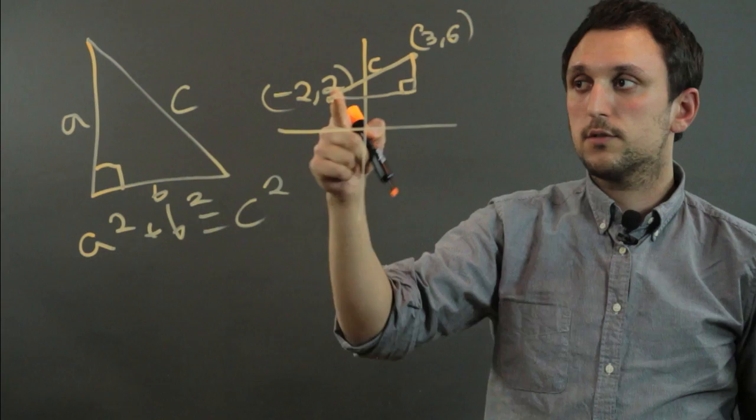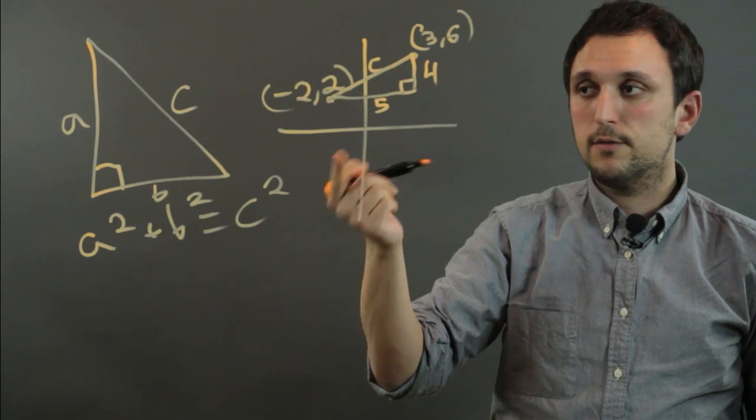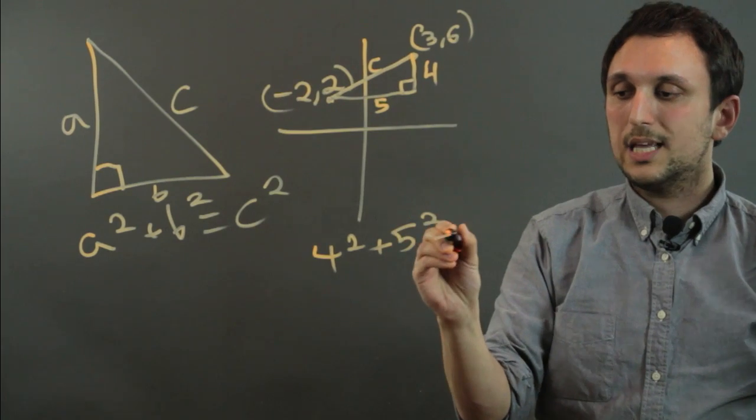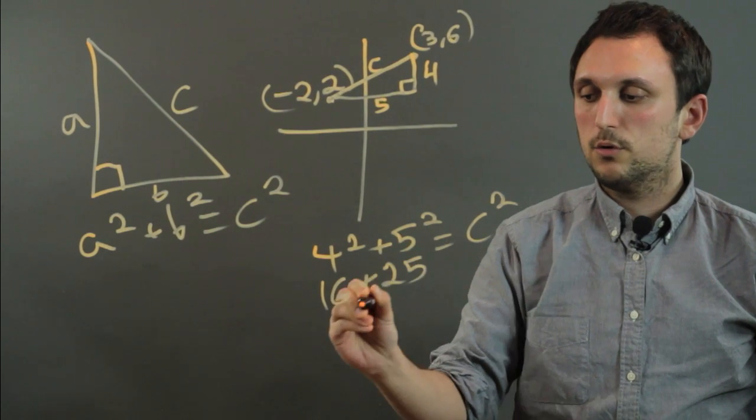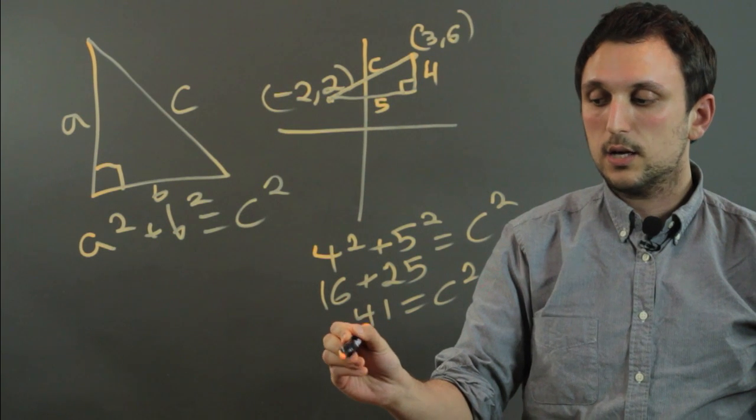Here, from 6 down to 2 is 4, and from 3 over to negative 2 is 5. So we say 4 squared plus 5 squared equals C squared, or 16 plus 25, which is 41, equals C squared. And then C equals the square root of 41.